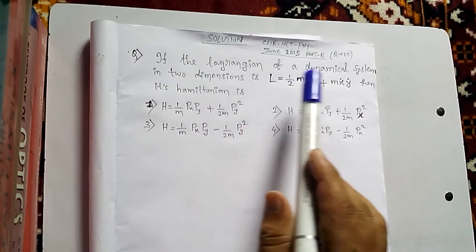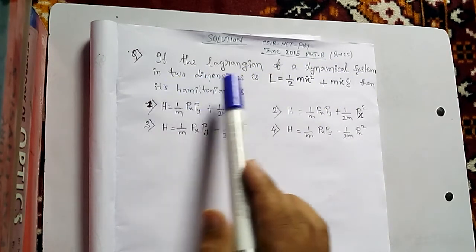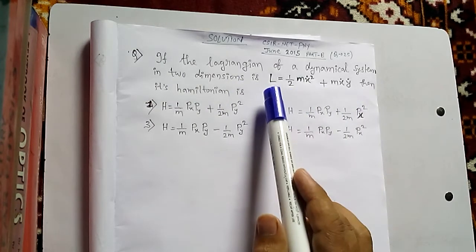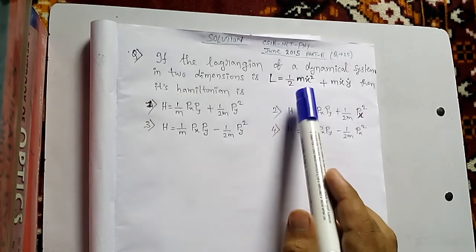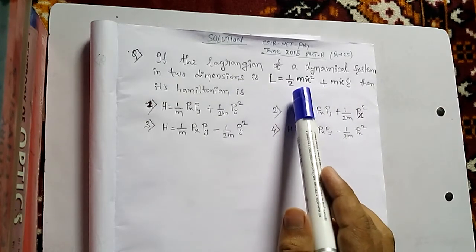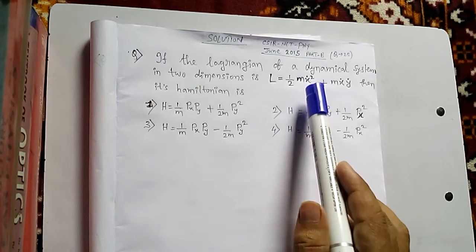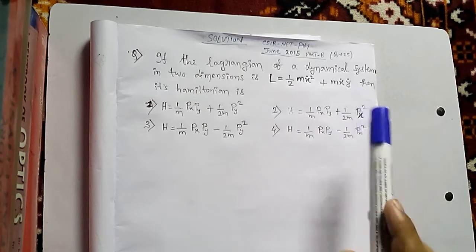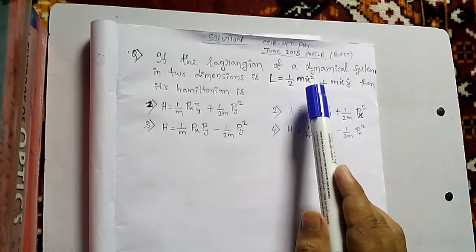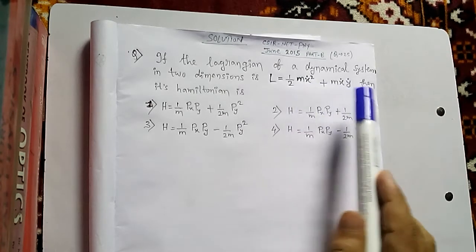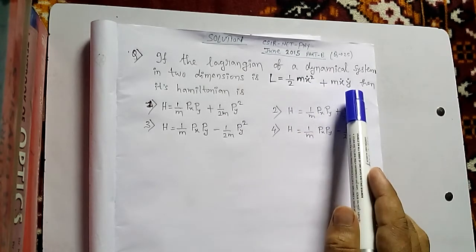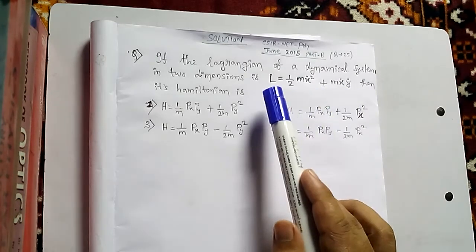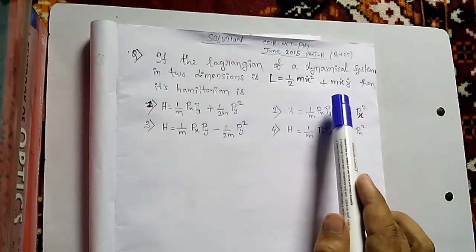It says: if the Lagrangian of a dynamical system in two dimensions is given as this, where L is the symbol for Lagrangian, M is the mass of the particle, X-dot is the velocity in the X direction and Y-dot is the velocity in the Y direction. X-dot and Y-dot together signify that this Lagrangian is two-dimensional.